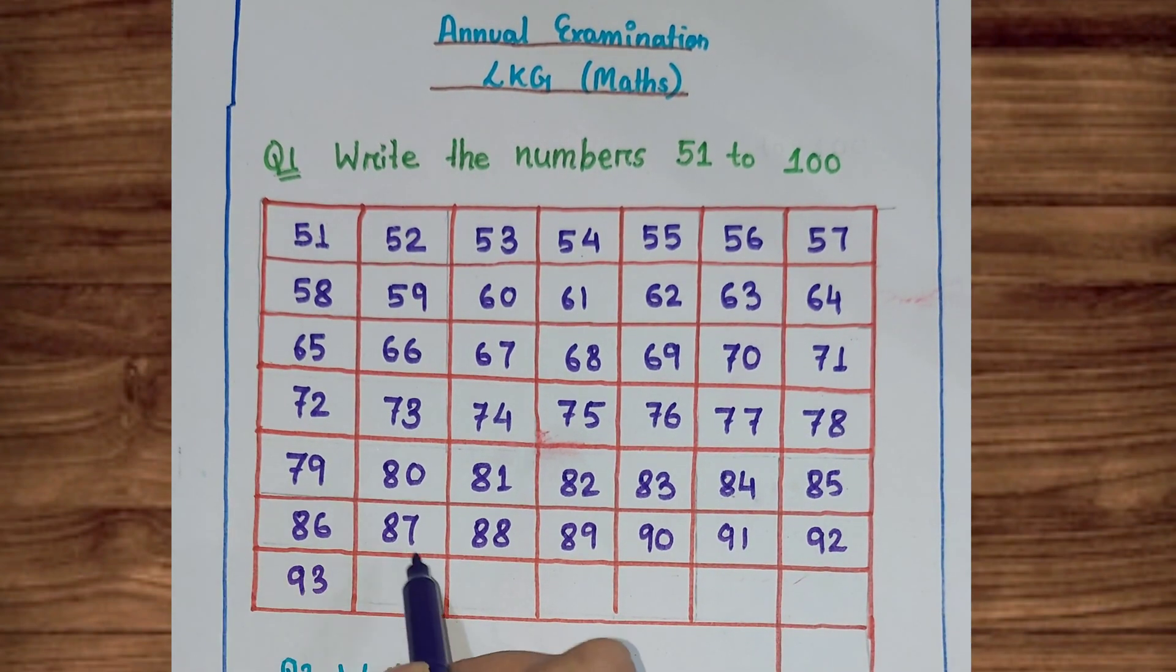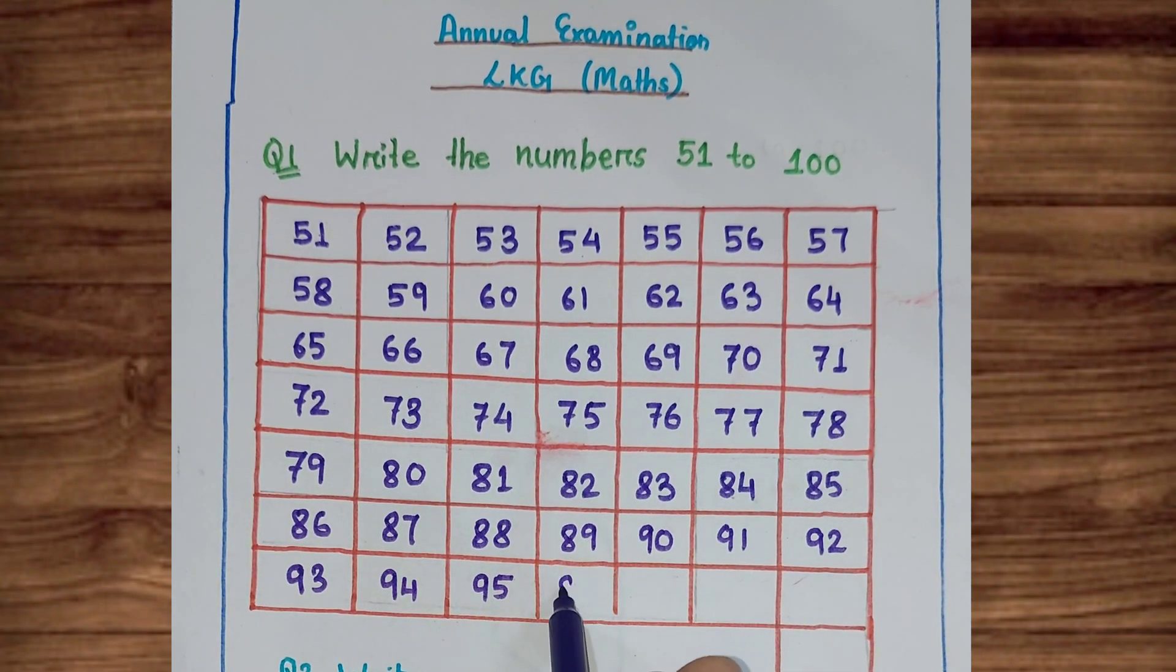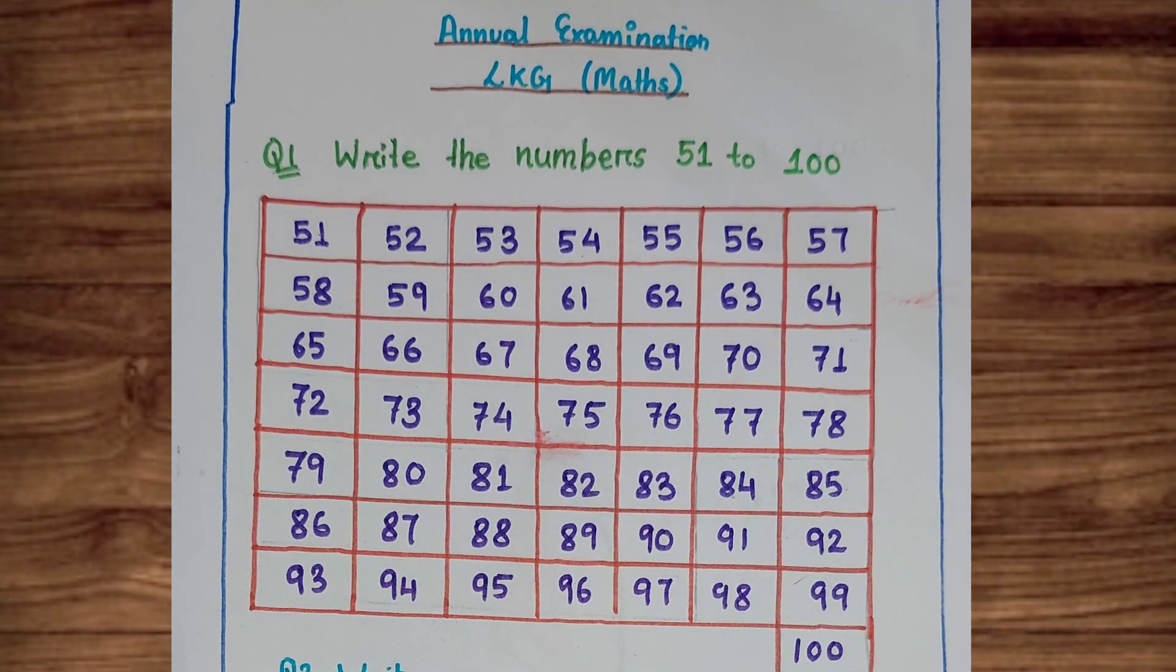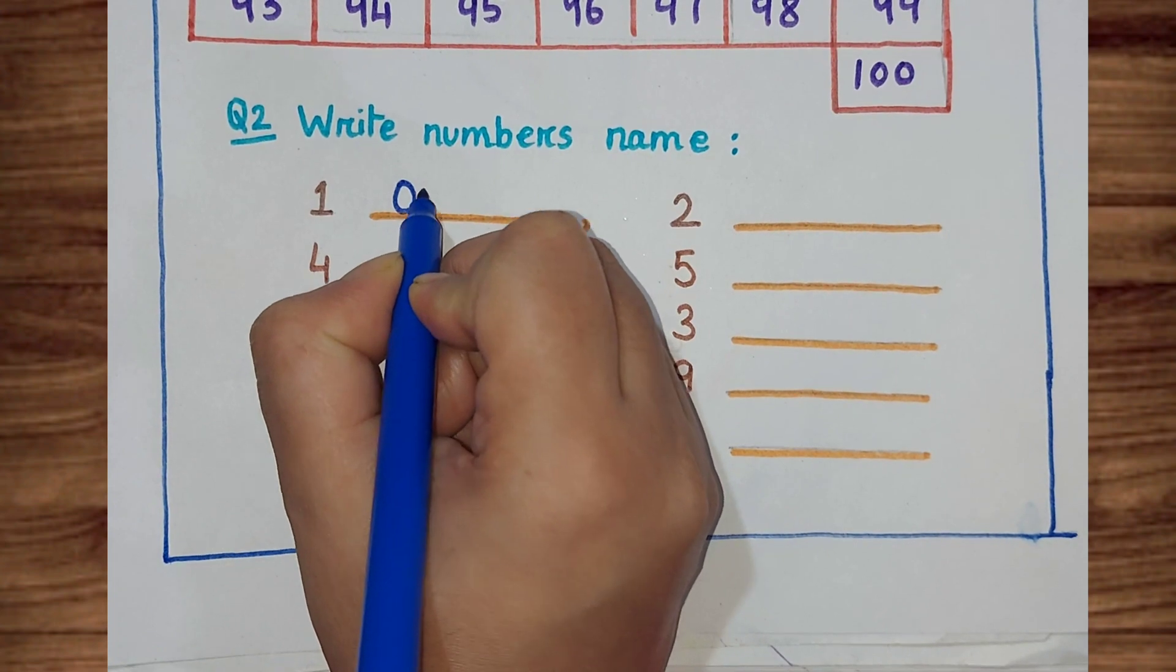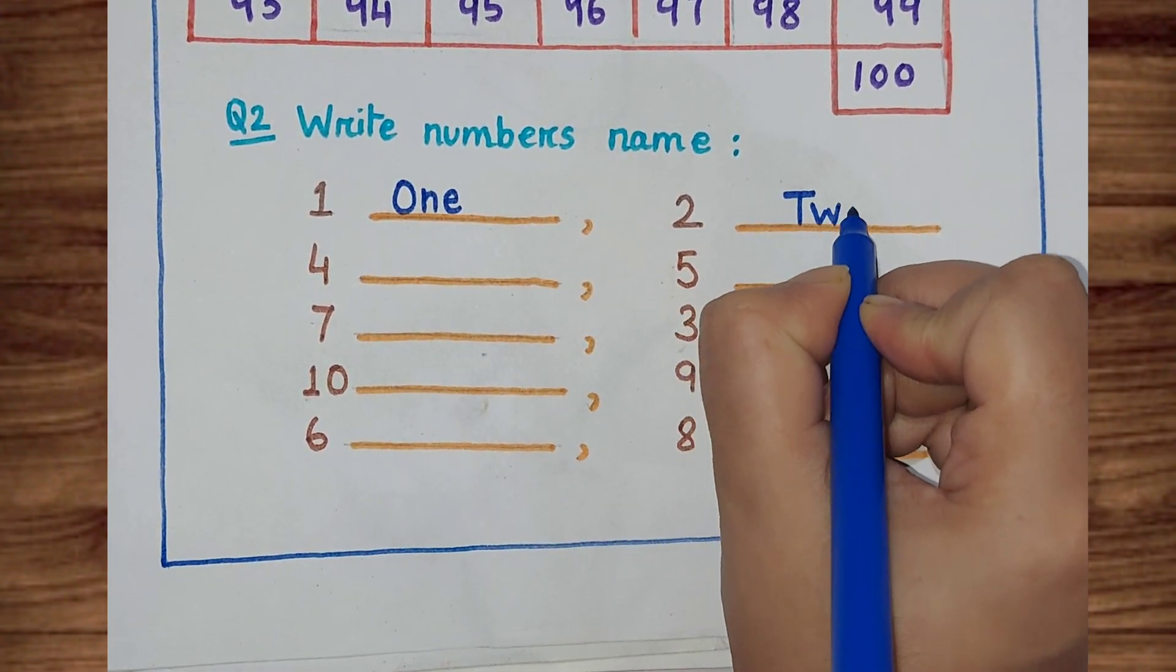92, 93, 94, 95, 96, 97, 98, 99, and 100. Next, write the numbers name. One: O-N-E. Two: T-W-O.